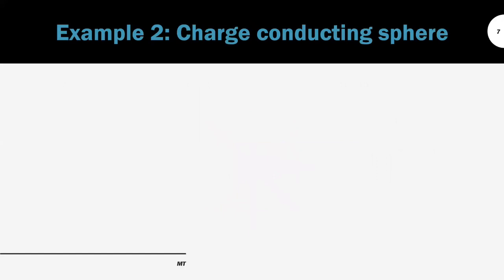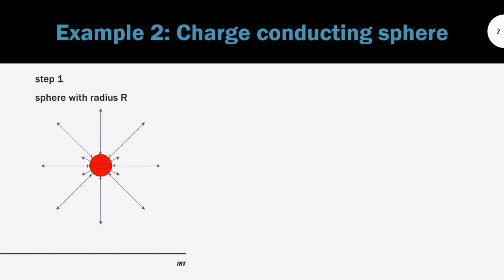The second example is about the conducting sphere. The sphere is similar to the point charge but a little bit bigger. We have a sphere with radius r that has charge on the surface of the sphere. If there are charges inside the sphere, they repel each other to the surface, meaning there is no charge inside the sphere, and therefore no electric field line inside the sphere. Other than that, the field pattern is similar to the point charge.